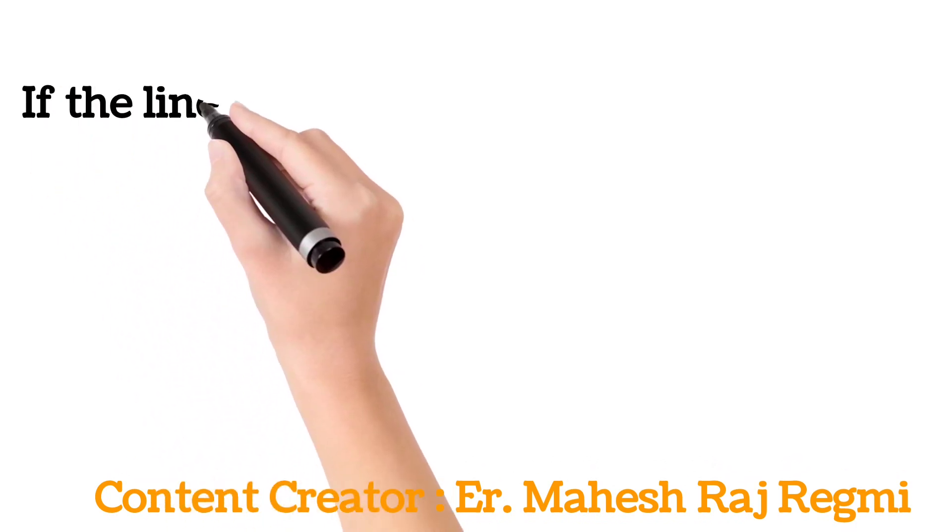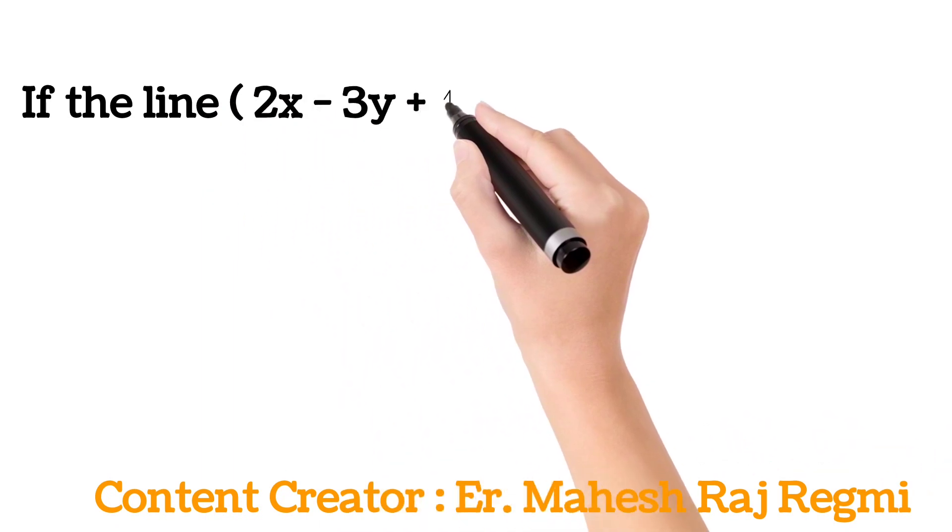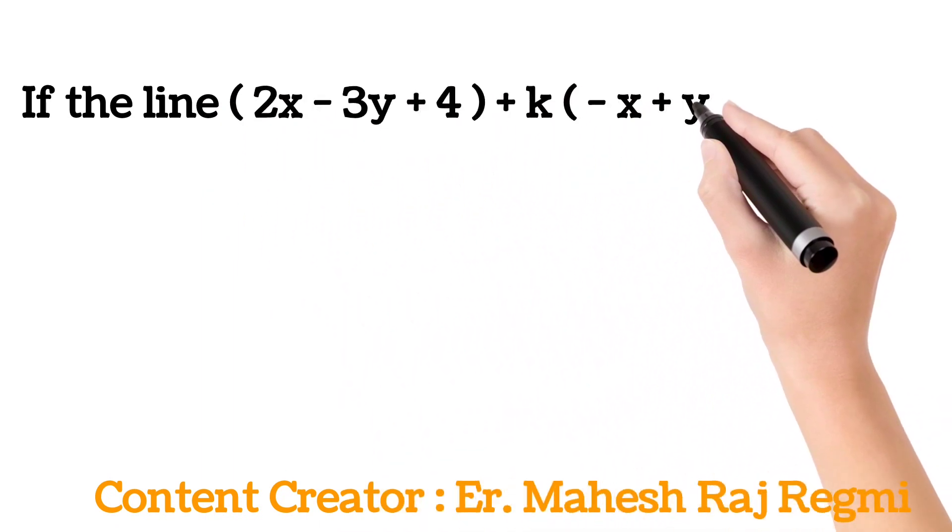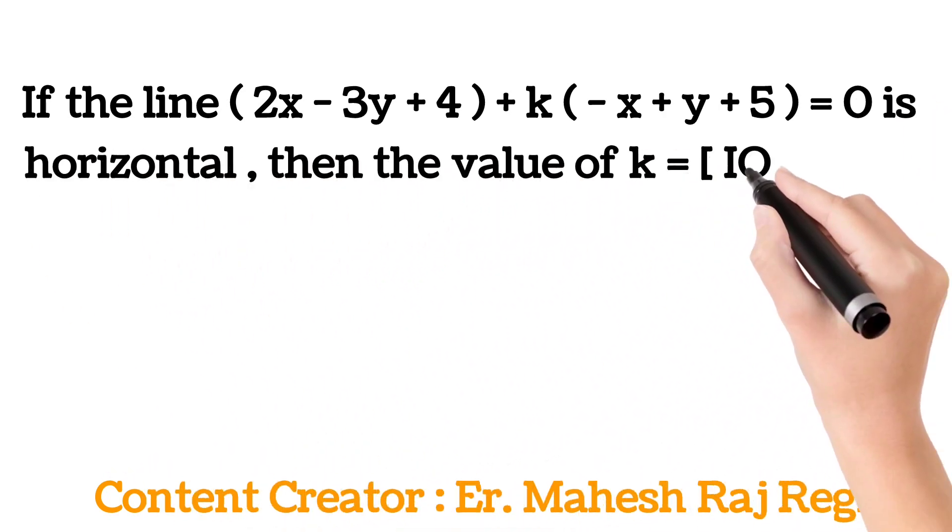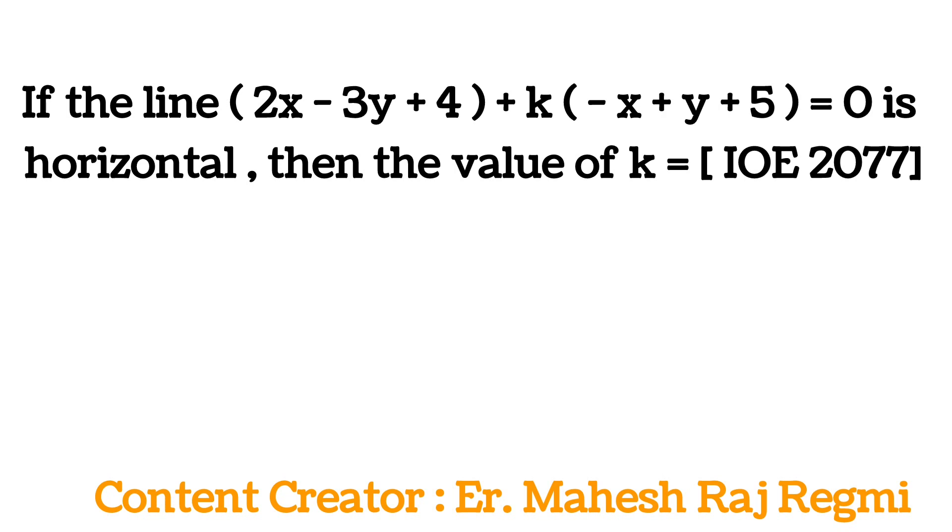Our question is, if the line 2x minus 3y plus 4 plus k minus x plus y plus 5 equals 0 is horizontal, then the value of k equals. This question was asked in IOE entrance 2077. Options are,